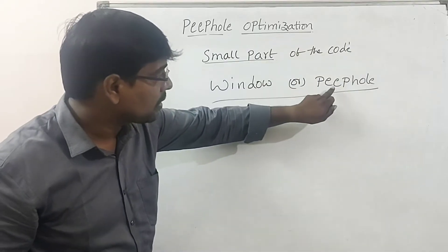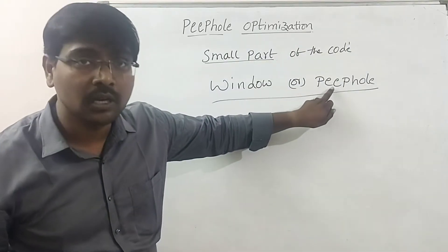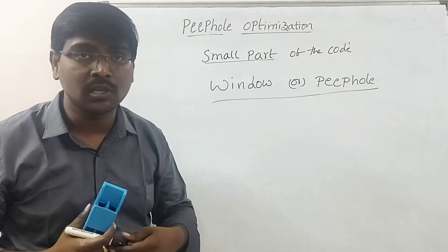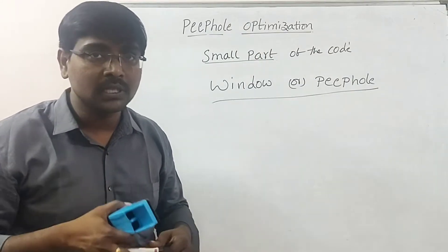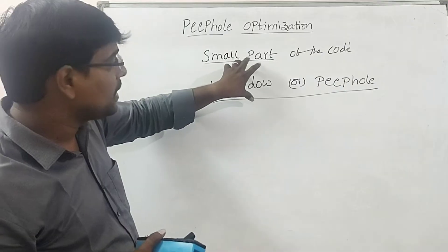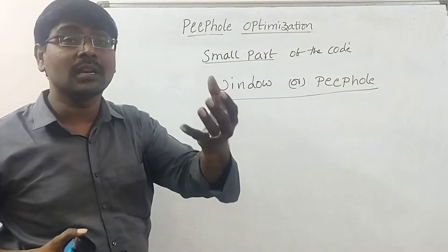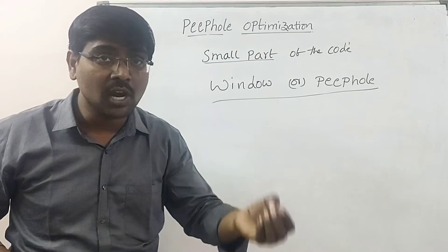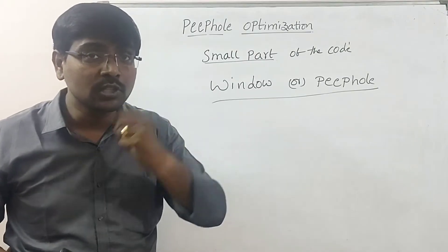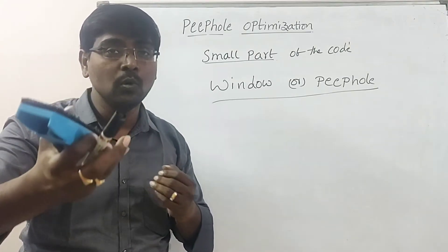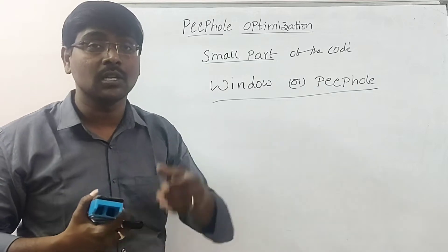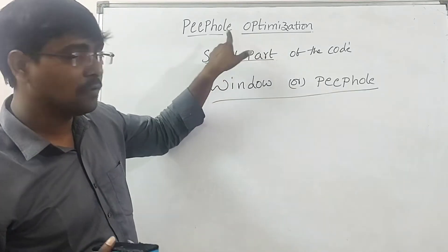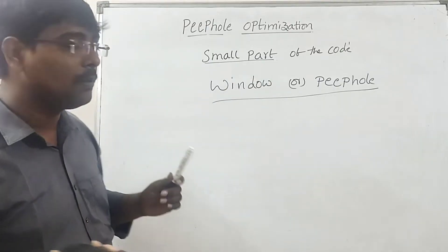Optimization performed on a small set of instructions is called Peephole Optimization. The purpose is to replace this code with code that runs faster — replace the code with shorter code that executes very fast — to improve the performance and to save the memory.